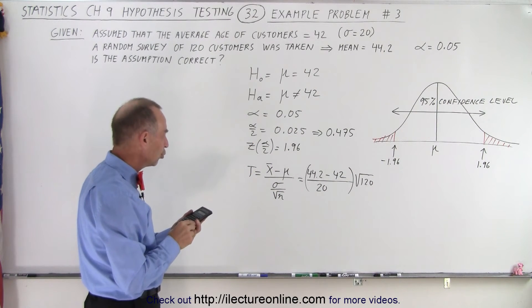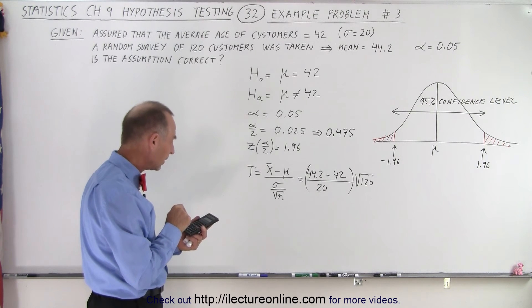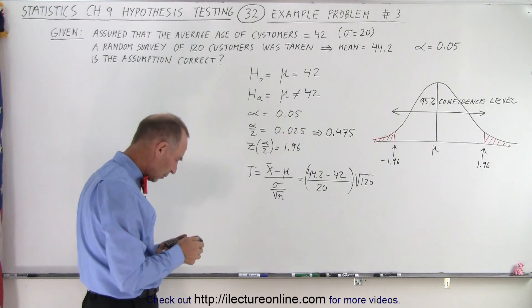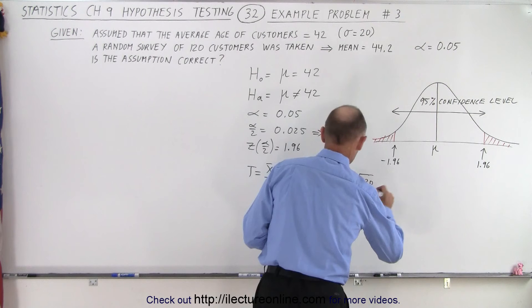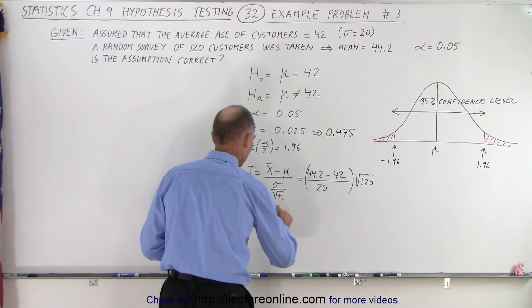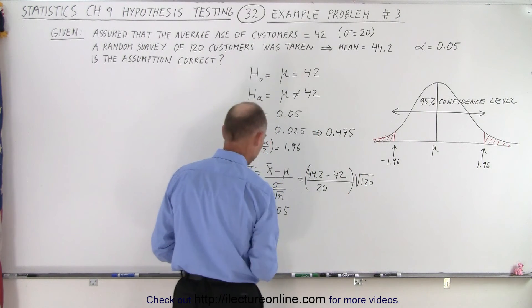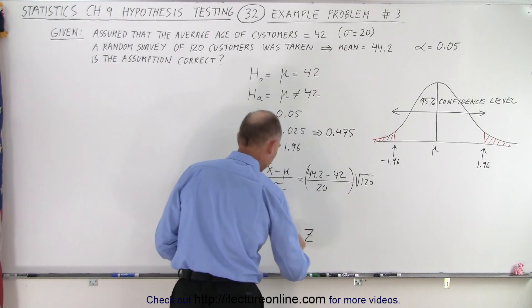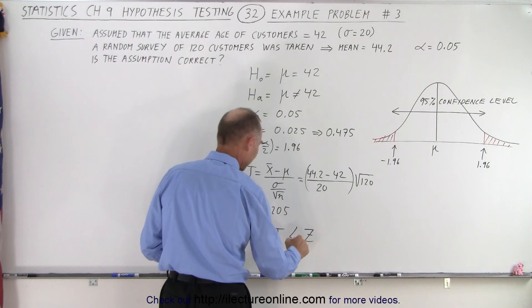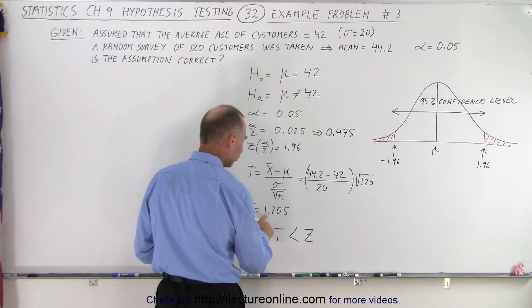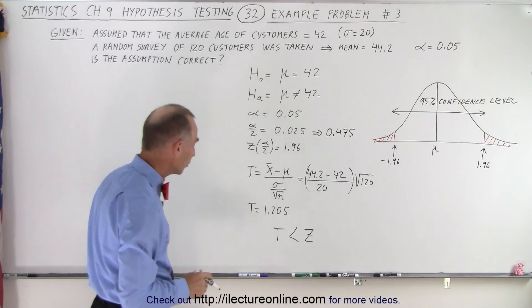We have 2.2 times the square root of 120, divided by 20, and we get a test statistic of 1.205. Now we compare the test statistic to the z-score: t equals 1.205 and z equals 1.96. Since the test statistic is smaller than the z-score, it does not fall into the critical region.